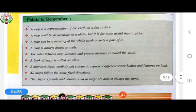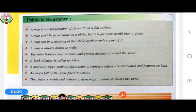A book of maps is called an atlas. We learned the direction on a map. We learned the scale of a map. A map is always drawn to scale.